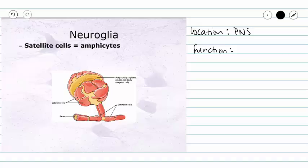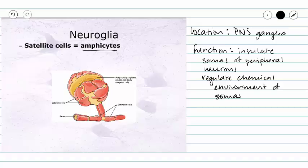In our peripheral nervous system, we have two types of neuroglia. We have satellite cells, which are often called amphicytes, and we have Schwann cells. Our satellite cells are going to be located in ganglia, where they are going to provide insulation around the somas of peripheral neurons and regulate the environment of those somas. Here we can see our soma is surrounded by our satellite cells, and those satellite cells are regulating the chemical environment.